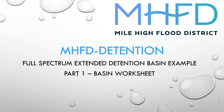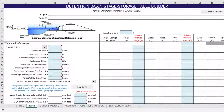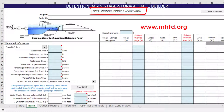This example will focus on the preliminary design of a full spectrum extended detention basin. I have opened a blank workbook and switched to the basin worksheet to start this example. I'm using version 4.03 released May 2020. Always make sure you have the most current version before starting a new project.